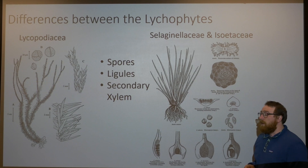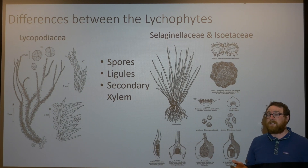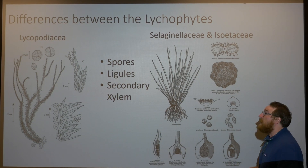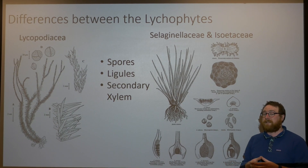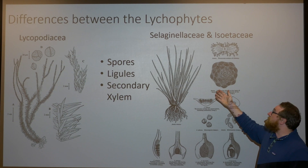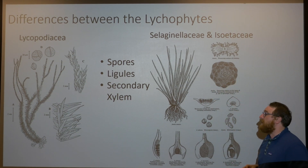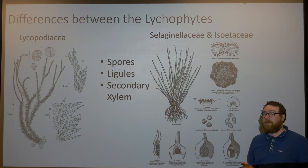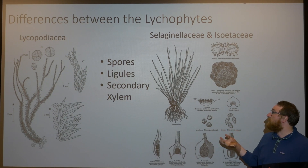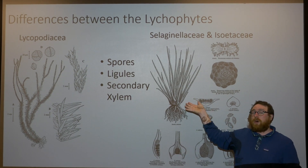These common traits in lycophytes are also hiding the diversity within this group. When we think about angiosperms and gymnosperms they're very similar organisms, but the lycophytes are pretty diverse as far as how closely related they actually are to each other. Because of that we see some very interesting traits, especially with the differences between the Selaginellaceae and the Isoetaceae and their sister group the Lycopodiaceae. All of these have spores able to reproduce with, but one thing you don't see in the Lycopodiaceae but you do see in these other two groups is the development of a structure called a ligule.